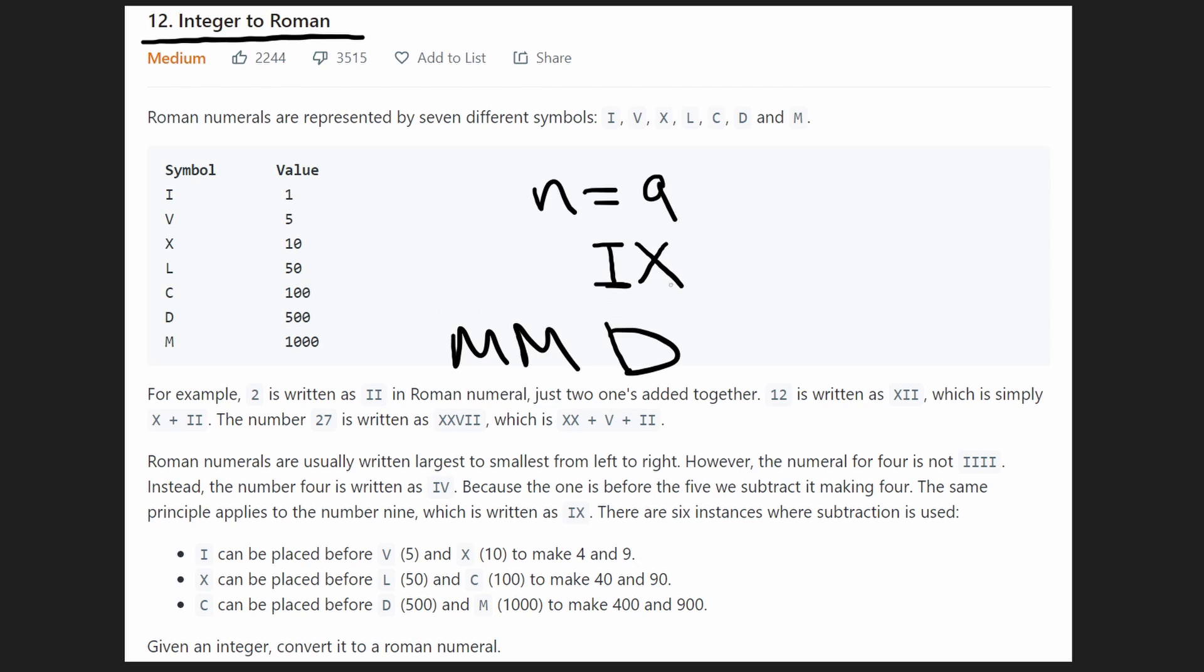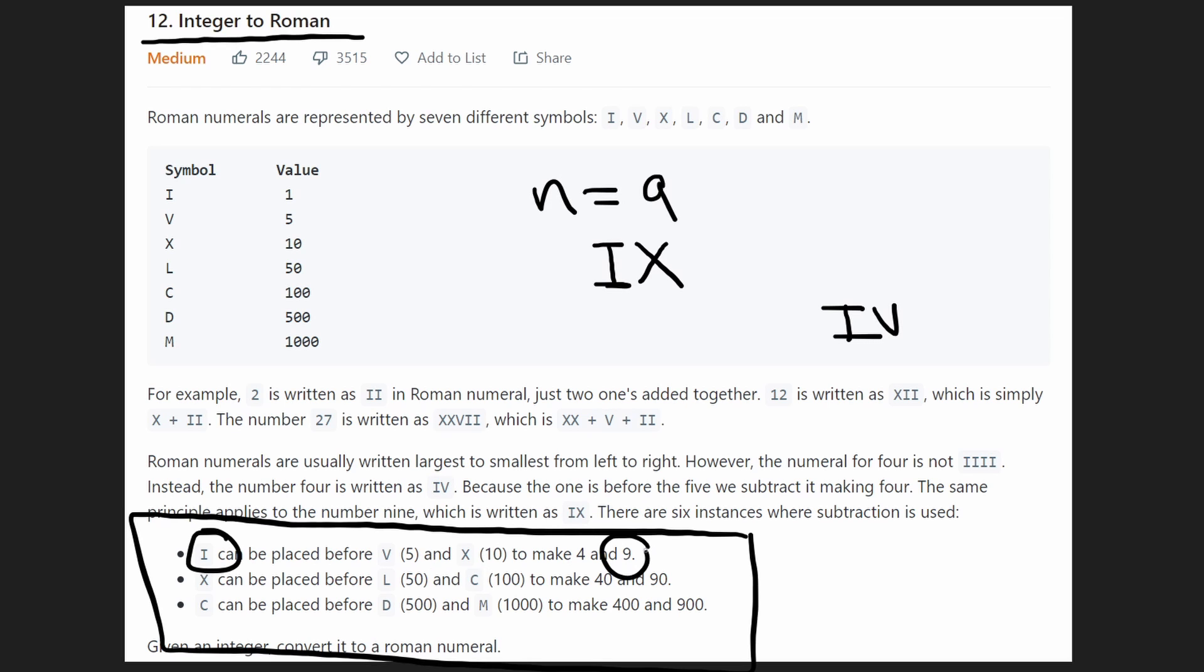But there are some special rules where actually the smaller character, the symbol with a smaller value, can go before the symbol with a larger value. And it only works in a few specific cases, and those cases are described below with these three bullet points. So an I can go before a V, which is the number 5. And if it does go before V, so if we did IV, that would be the number 4. If I goes before X, that is the number 9. An X can go before an L, and that will make the 50 turn into a 40. Or the X can go before a C, and that will make 100 turn into 90. And there's one more case here. C before D is 400. C before M is 900.